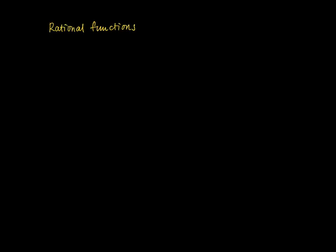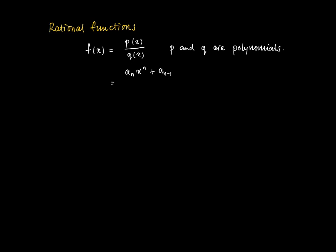In this clip I will discuss the special properties of rational functions. A rational function is P of X divided by Q of X, where P and Q are polynomials. This means I can write F where the numerator P is a weighted sum of power functions — some terms may cancel — and the same holds for the denominator.